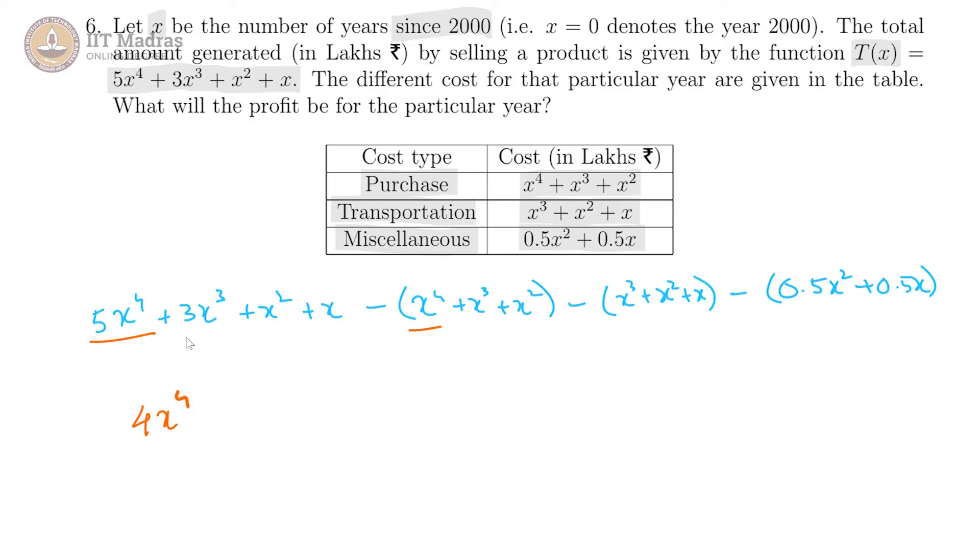And x^3 there are three terms, 3x^3 and minus x^3 and minus x^3 here. So we get plus x^3.